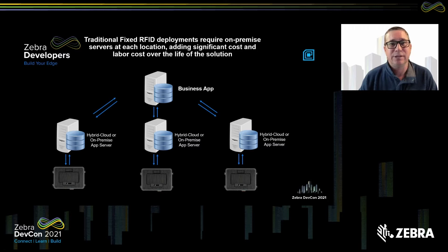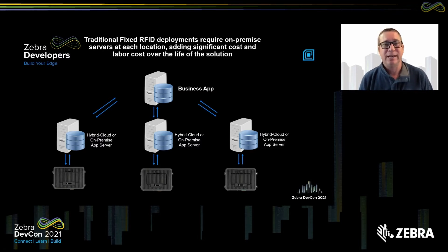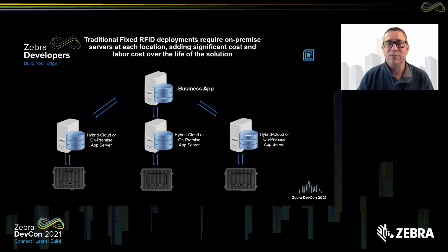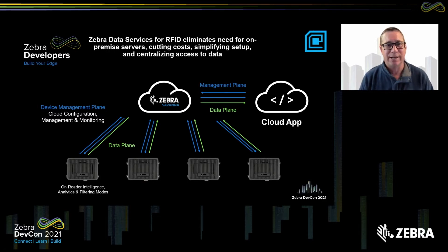The way we do that is by replacing the traditional technology. Traditionally, every reader had a server — on-prem or hybrid cloud via VPN — that consumed raw tag reads, processed them, and decided what to do with them. In the new model, what's now available for FX readers is direct to cloud. The reader takes care of all three planes: the management plane — controlling read mode, LEDs, GPO, network address — and the data plane. There are roughly 13 APIs covering these options, which we'll walk through shortly.